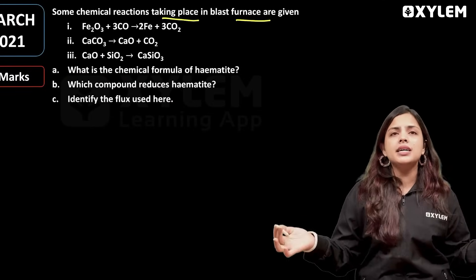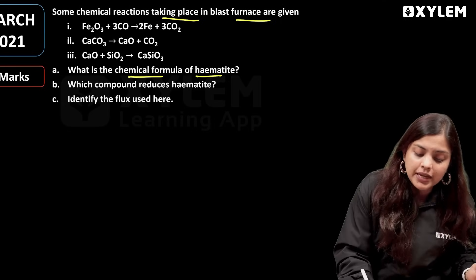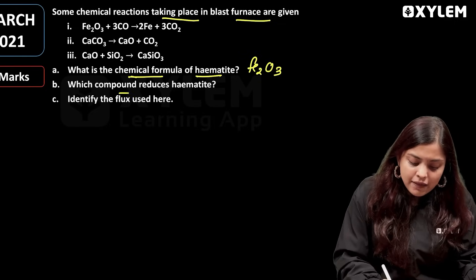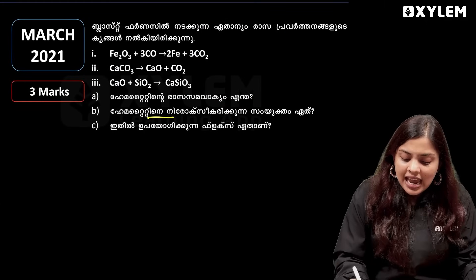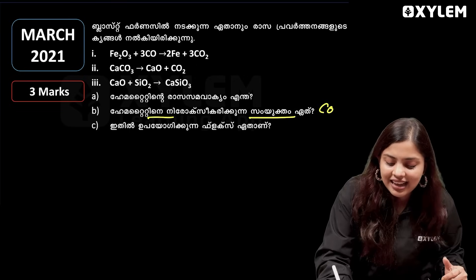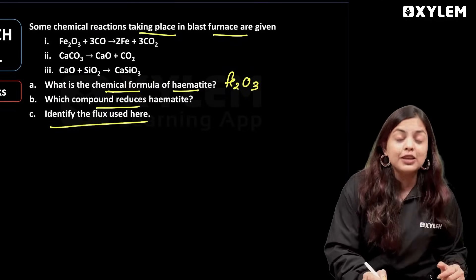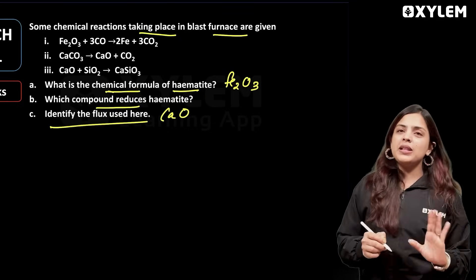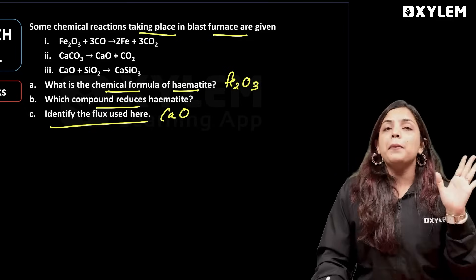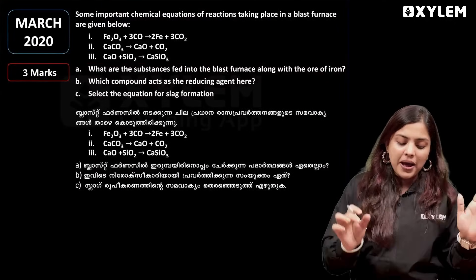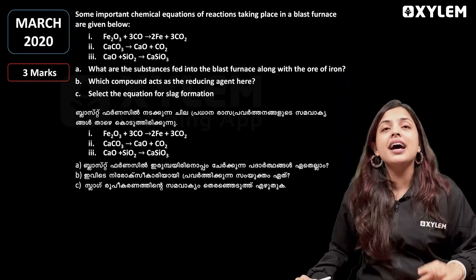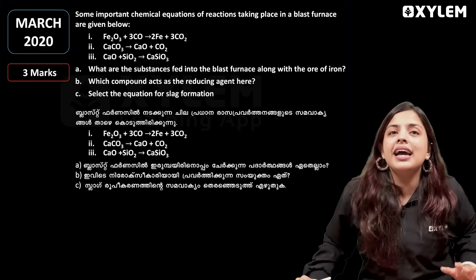Some reactions in the blast furnace: the chemical formula of hematite is Fe2O3. The compound that reduces hematite is carbon monoxide, which is the reducing agent. Calcium oxide is the flux, silica is the gangue, calcium silicate is the slag, and the final iron product is called pig iron.